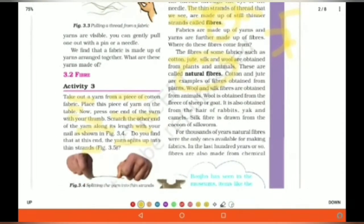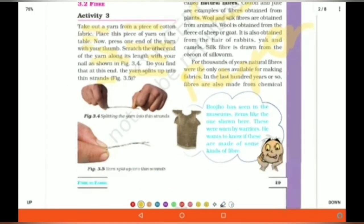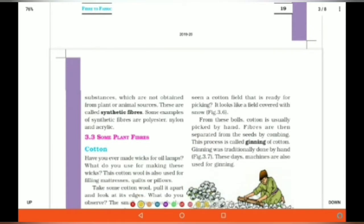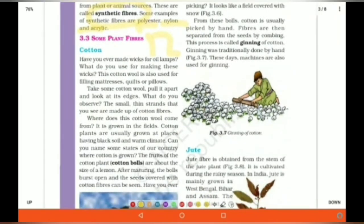Now, there are artificial fibers too like rayon and acrylic. They are called artificial fibers or synthetic fibers. How are they made? They are chemically made. For example, polyester, nylon and acrylic and also rayon. Now, we will be studying about some plant fibers.